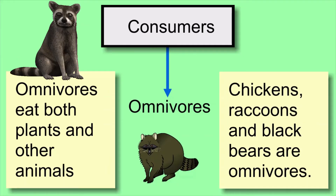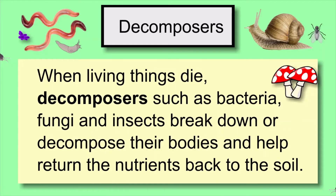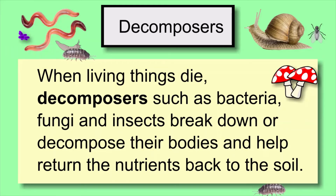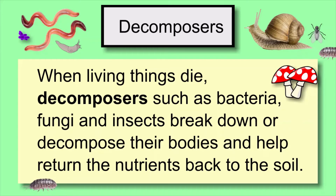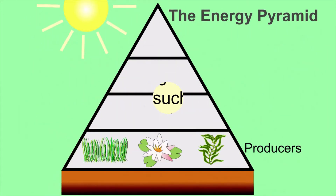Omnivores eat both plants and animals. Raccoons, black bears, as well as most humans are omnivores — they eat both plants and animals. When living things die, decomposers such as bacteria, fungi, and some insects break down or decompose their bodies and help return the nutrients back to the soil or other environments.